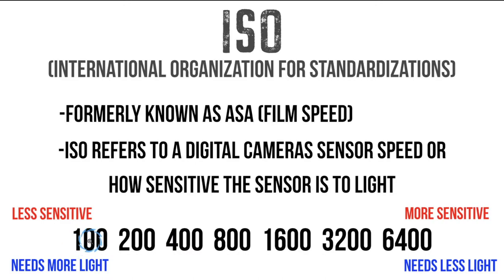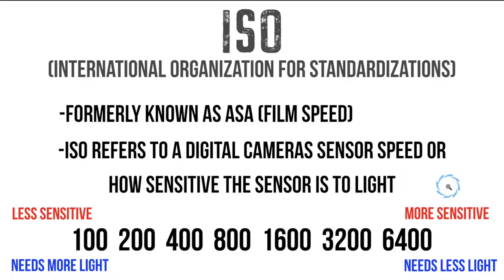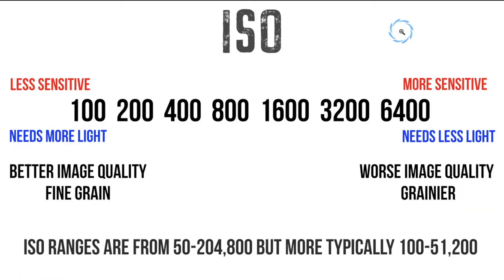If you're in a bright, sunny location you can shoot at ISO 100. If you are in a dark situation, you're going to need 6400. Remember, everything in the camera has two options — one is controlling the amount of light. ISO controls the amount of light by being either more sensitive or less sensitive. It also controls film grain, or what we now call noise.